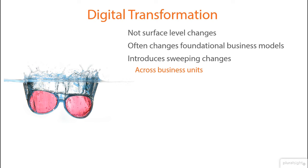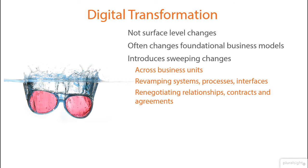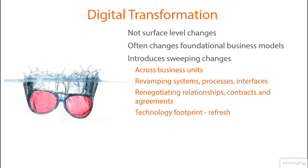This may involve revamping systems, processes, internal and external interfaces, as well as renegotiating relationships, contracts, and agreements. Most such initiatives end up refreshing the overall technology footprint as well in order to support rapid evolution and change of the business. The new refrain for enterprise architecture in general is to build to evolve, not to last.